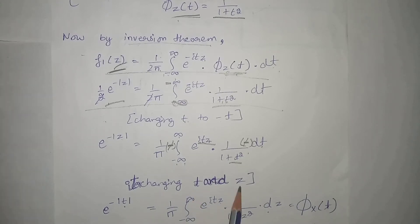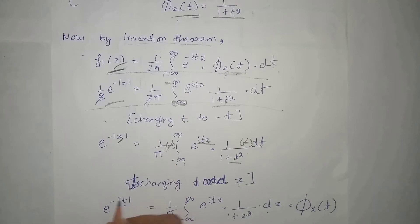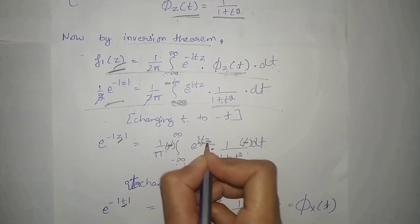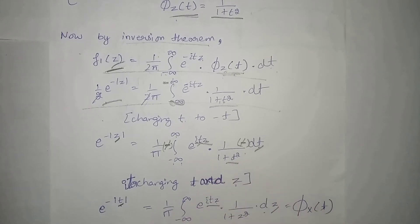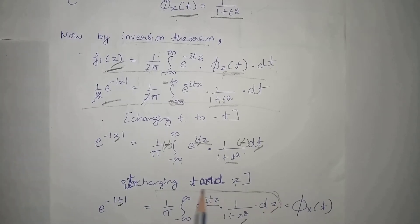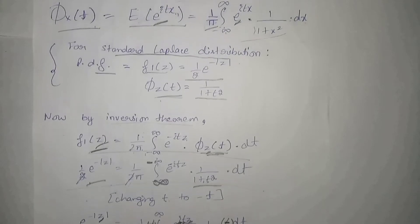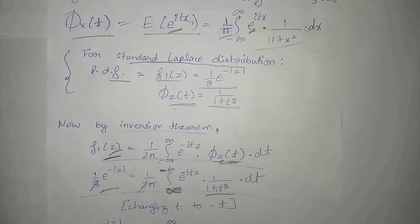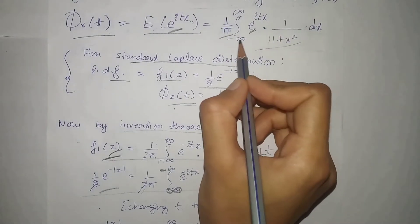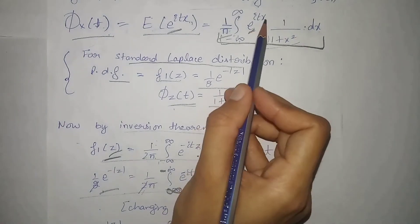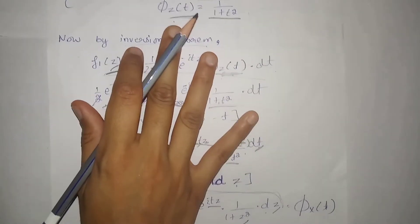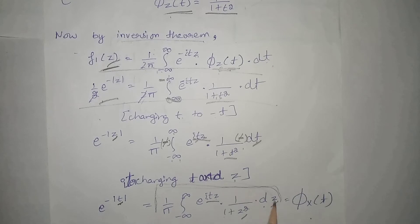Moreover, we interchange t and z as well, that is z in place of t and t in place of z. Then we put z in place of t again. Now we see that the full term obtained is actually equal to the characteristic function we saw earlier for x, the standard Cauchy variate. This is exactly equal to it; we were using variable x before and now we are using variable z. That means this is the characteristic function of the standard Cauchy variate.